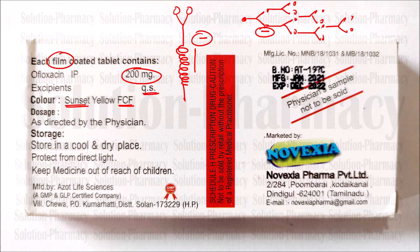Dose: as directed by the physician. Storage conditions: store in a cool and dry place, protected from direct sunlight, because sunlight contains UV radiation and produces heat. Direct exposure can cause deterioration in the chemical nature, potency, efficacy, and appearance of the tablet. Keep medicine out of reach of children, as they may be attracted and consume it unknowingly. This product is manufactured by Azot Life Science and marketed by Novexia Company. The batch number and manufacturing date are visible on the pack. This is a physician sample — not to be sold.